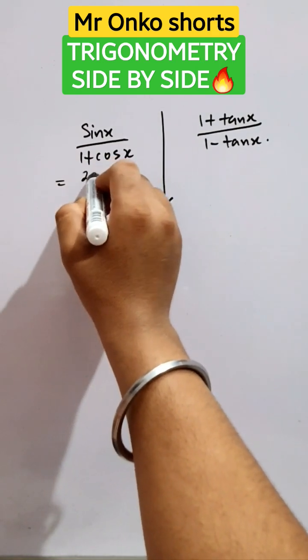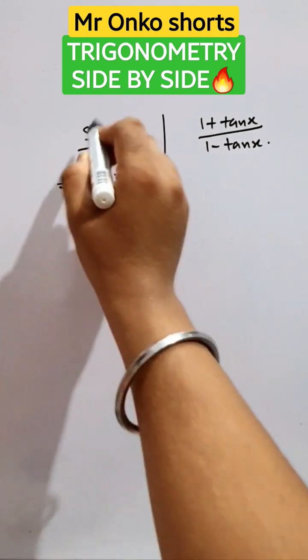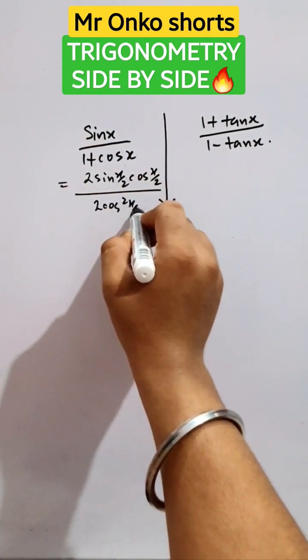This can be used in this pattern of some multiple angles. Sin x will be this. Now 1 plus cos x will be 2 cos square x by 2.